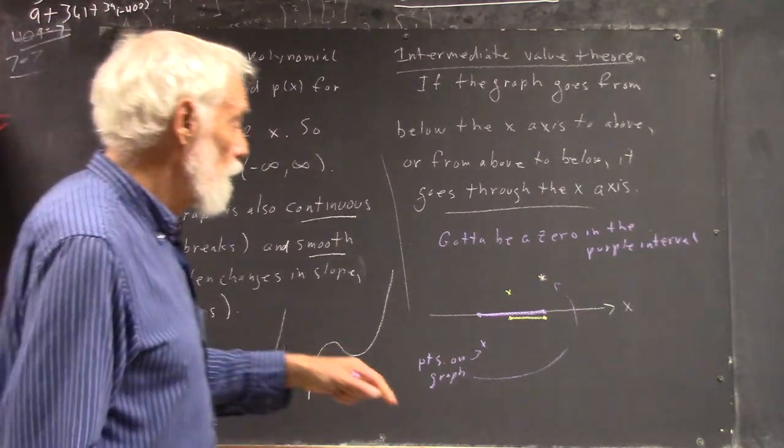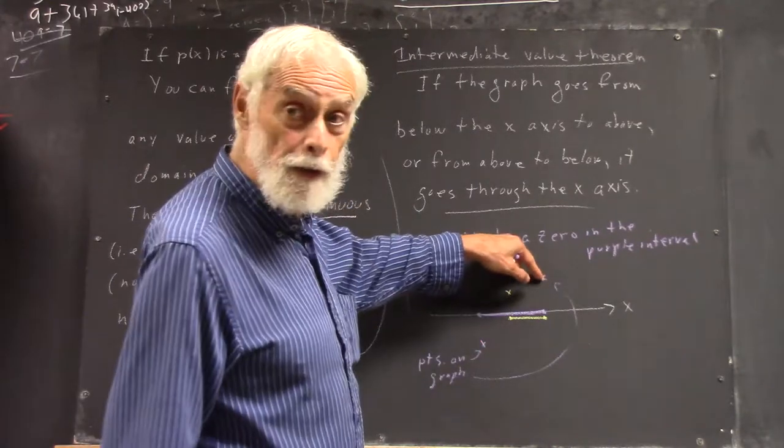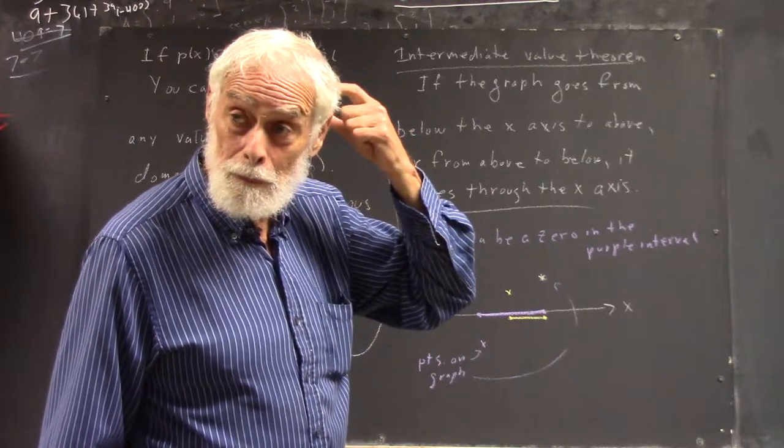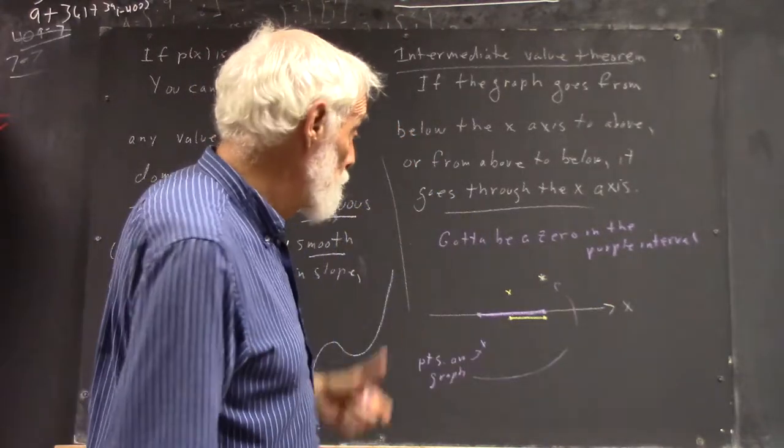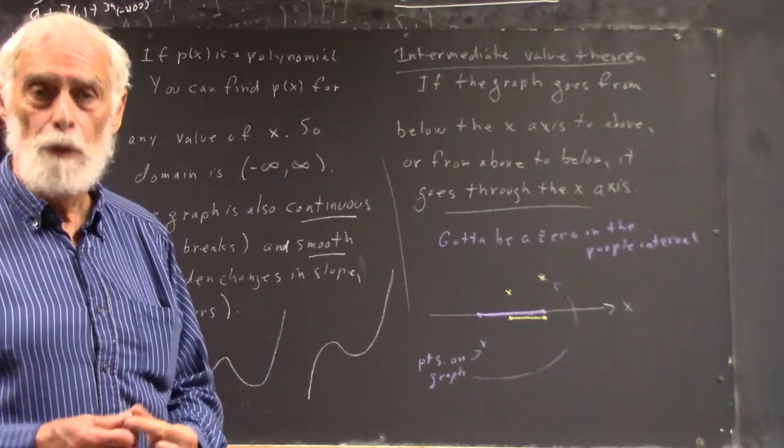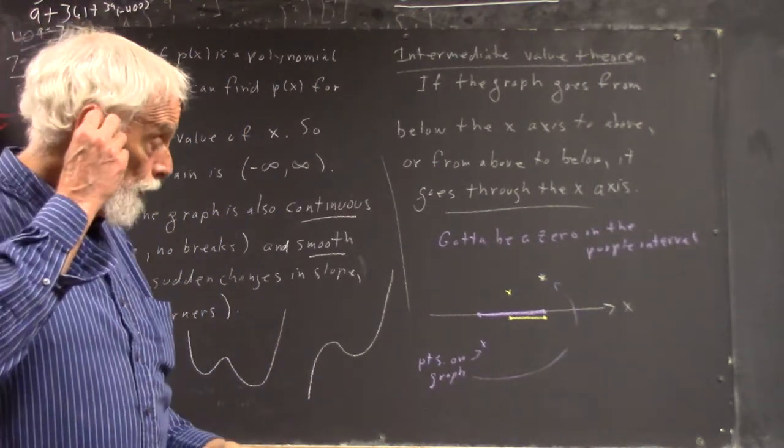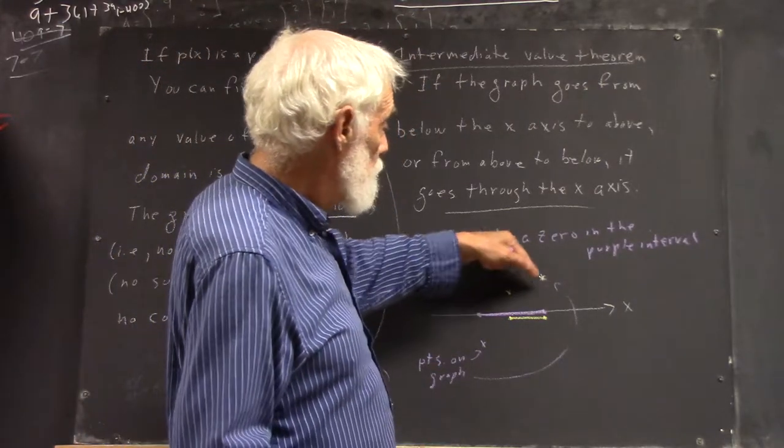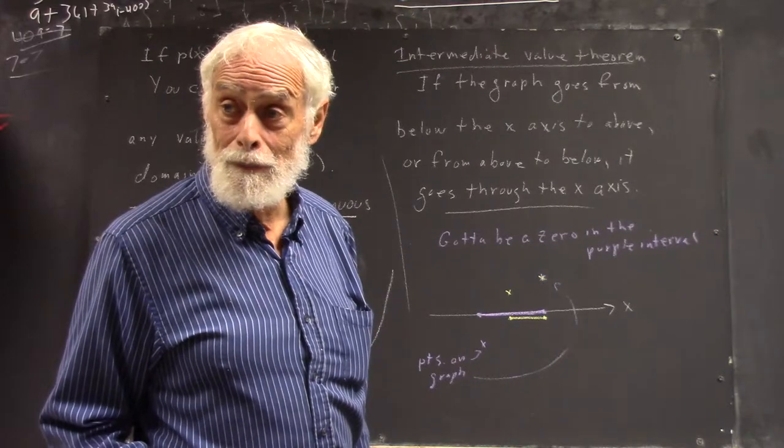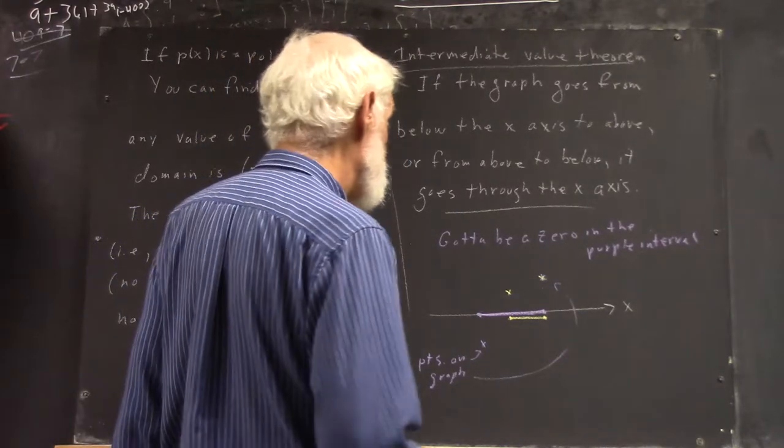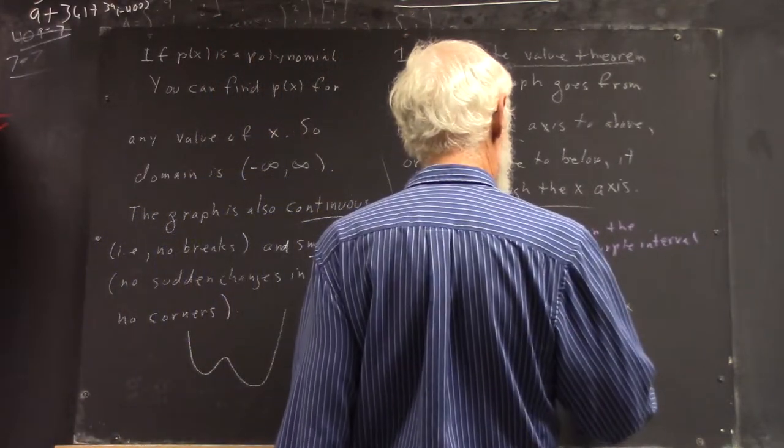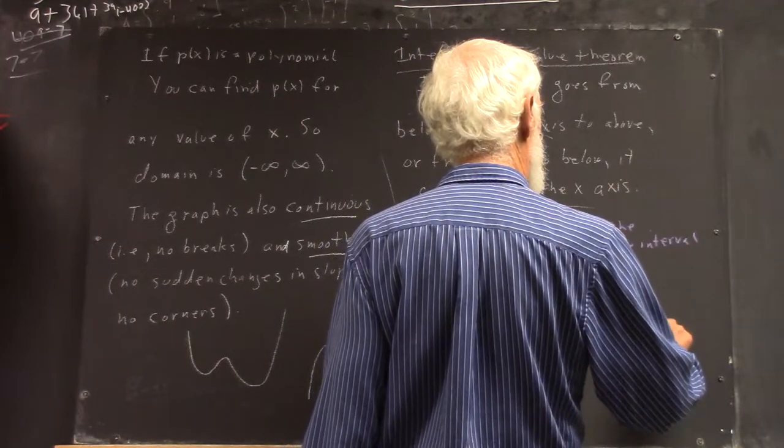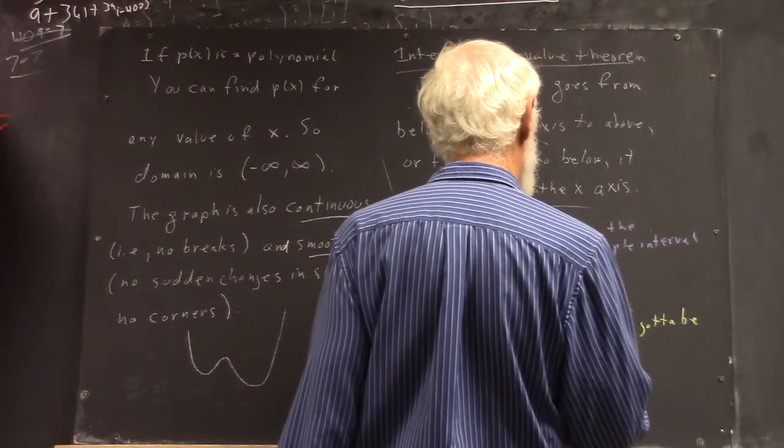So, does the graph got to have a zero on the yellow interval? I mean, it has to have a zero on the purple interval, because it has to smoothly go from here to here. It's got to go through the x-axis, and that's going to give you a zero, because that's what that zero is, the point where the graph goes through the x-axis, the point where the function has a value of zero. Well, you get from this point to this point without going through the x-axis, can't you?